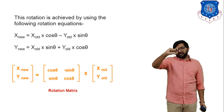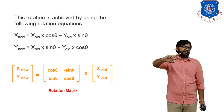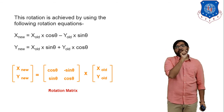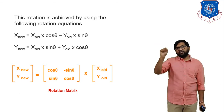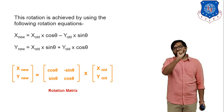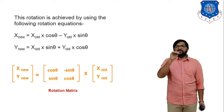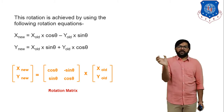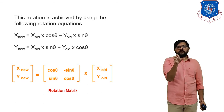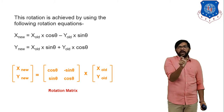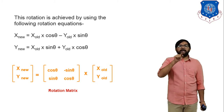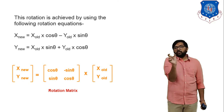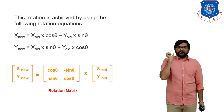Now we convert these two equations into matrix form. Recall matrix multiplication: first row times first column, then first row times second column, and so on for the second row. The matrix form is: [x_new, y_new] = [cos θ, −sin θ; sin θ, cos θ] × [x_old, y_old]. Multiplying first row by first column gives cos θ · x_old − sin θ · y_old, which matches the equation for x_new.